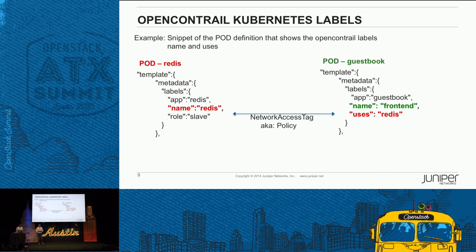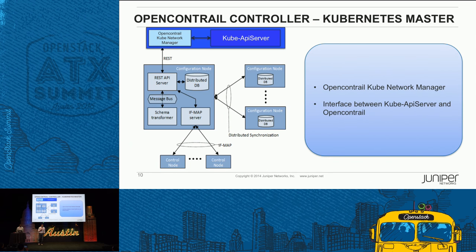This is an example of how you'd do a pod definition where the tags help communicate with each other. What we've had to do is add a listener called the Kube Network Manager. It's a plugin that listens to the Kube API server, and any messages that come through are converted to open Contrail-specific messages to program our forwarding engine. Whether it's a new network needing to be created when you launch a new service or pod, or connecting pods, all the translation happens in the Kube Network Manager.